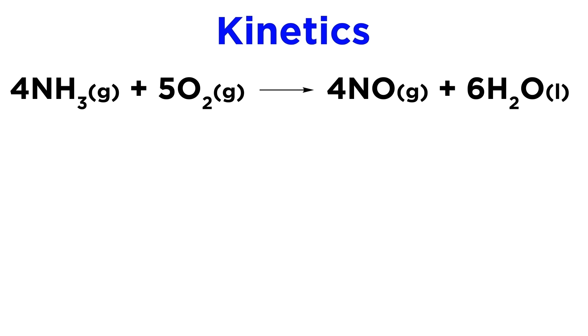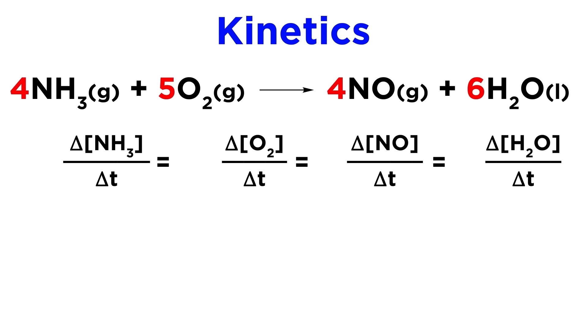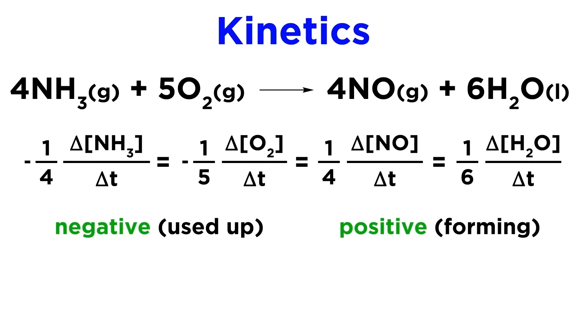Here is the combustion of ammonia. Notice the 4 to 5 to 4 to 6 ratio of the stoichiometric coefficients. In order to relate these rates of decomposition and formation to one another, we have to assign coefficients to each rate expression that are the inverse of these. So for ammonia we have one-fourth, for oxygen one-fifth, for nitrogen monoxide one-fourth, and for water one-sixth. The reactants will show a negative coefficient since they are being used up, and the products will show a positive coefficient as they are forming.